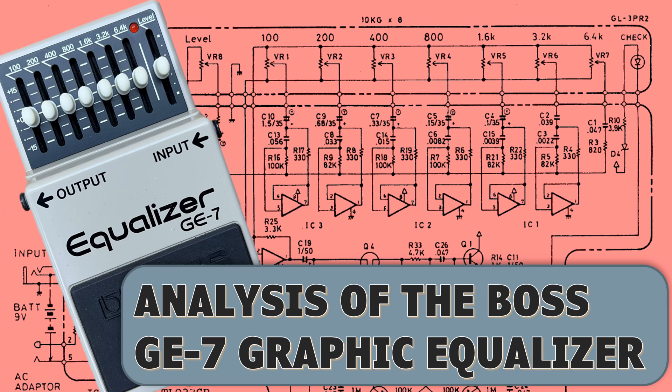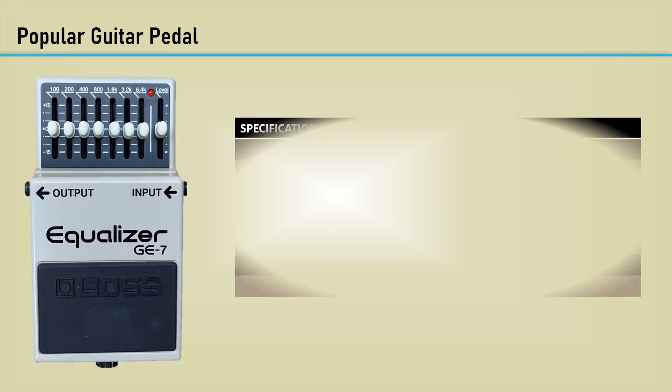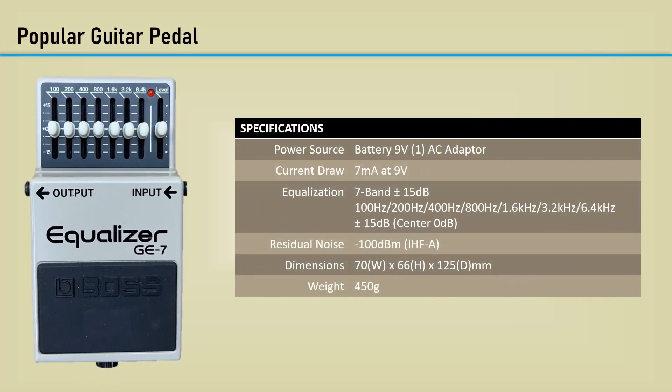I thought it would be interesting to analyze a very popular guitar pedal, the Boss GE7. I believe the GE7 came out around 1981. There have been several versions since then. The GE7 is an octave equalizer having 7 octave spaced bands from 100 Hz to 6.4 kHz with a boost and cut range of plus or minus 15 dB.